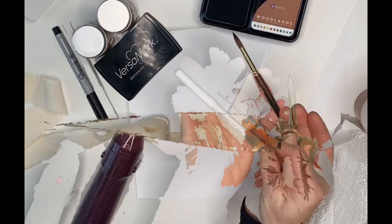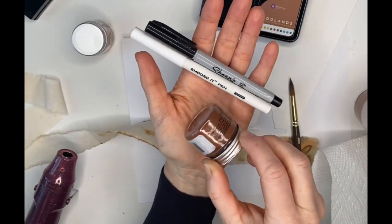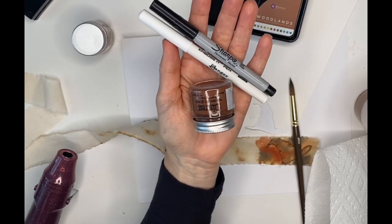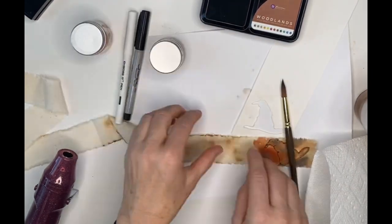You'll need muslin, some embossing pens, a Sharpie, I use the Tim Holtz distress ink I believe it's Rusty Hinge, and then it will just require a watercolor set, very basic.